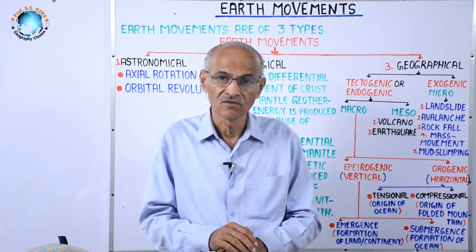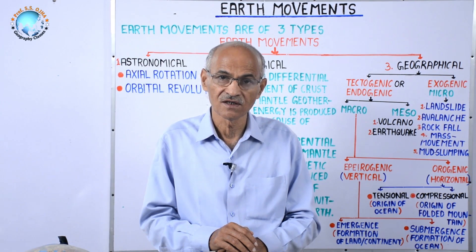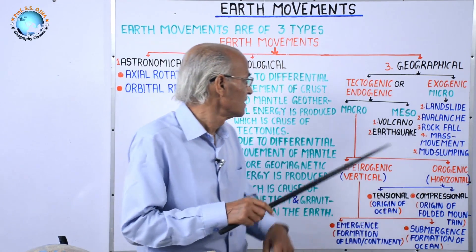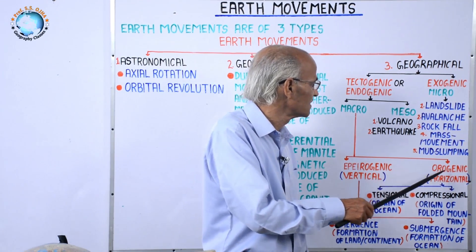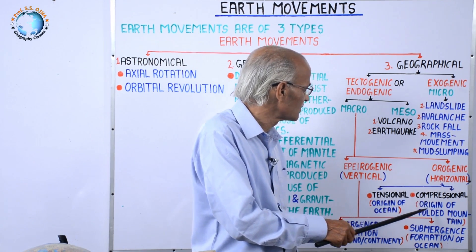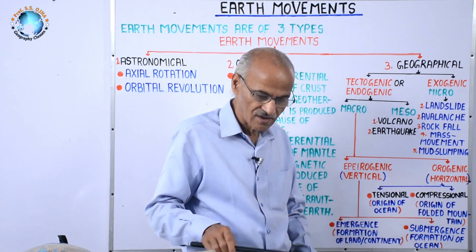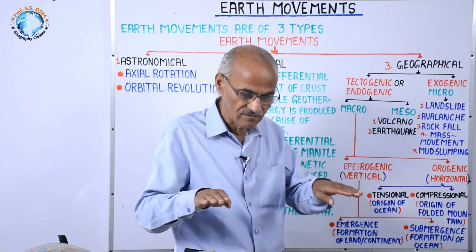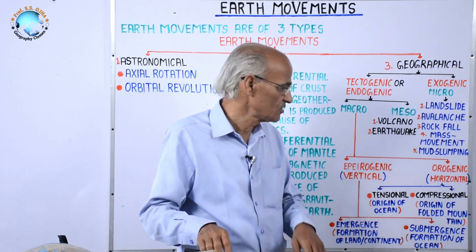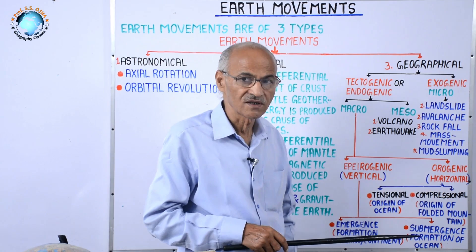This is the movement of the earth's crust in a horizontal direction. In tectonics, there are two types: eperiogenic and orogenic. In orogenic there are two forces — tensional and compressional. Tensional means when two plates move in opposite directions there is tension, and when two plates collide there is compression. In tension, a new sea spreads; in compression, folded mountains come into existence.